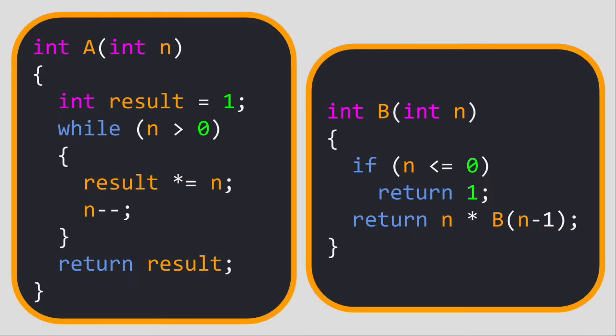The functions below perform the same task, which is computing n factorial. Function a uses iteration, or looping, while function b uses recursion.